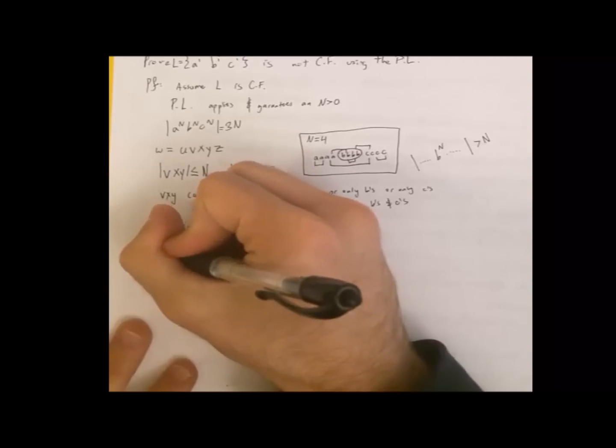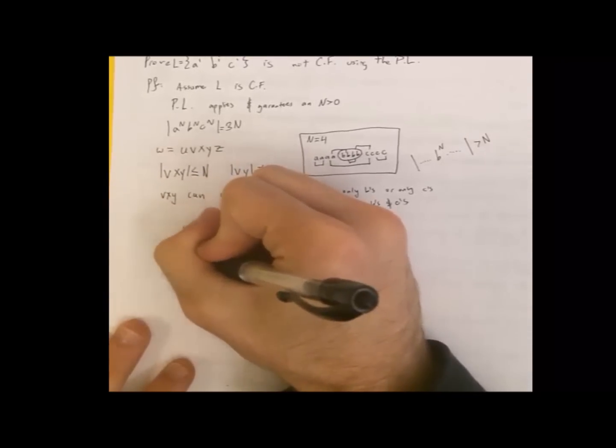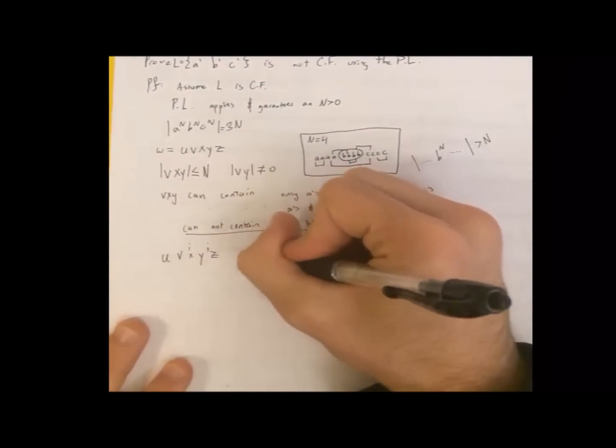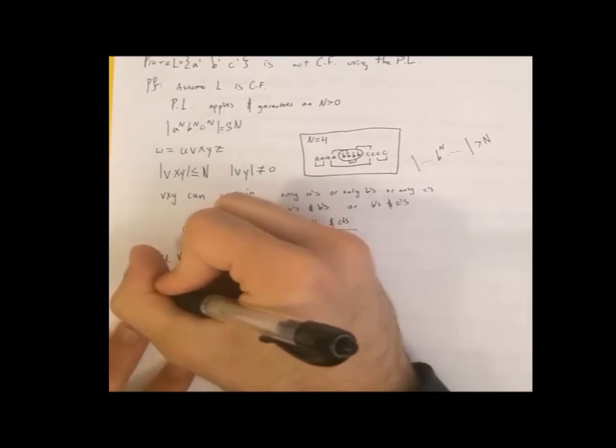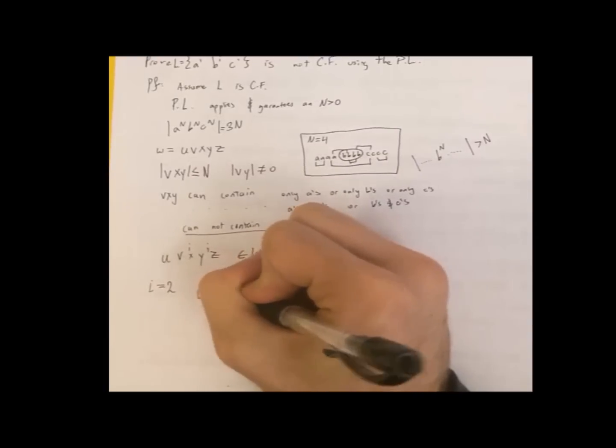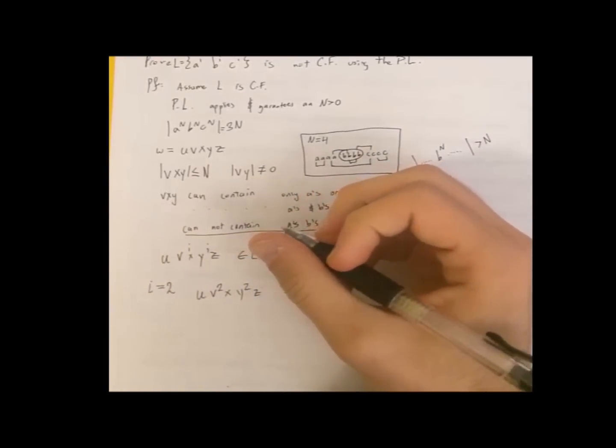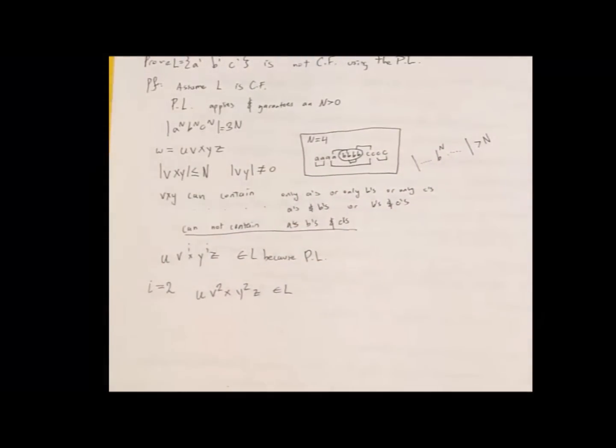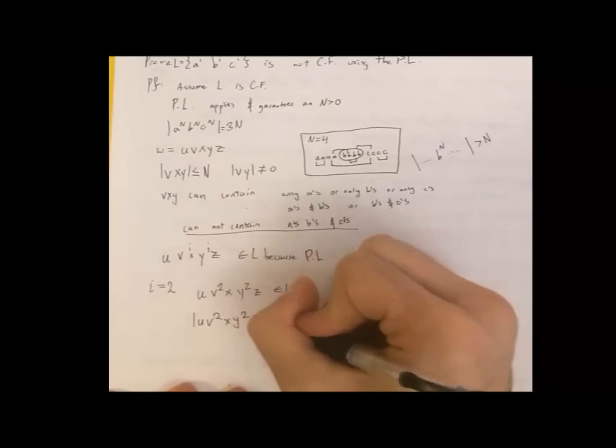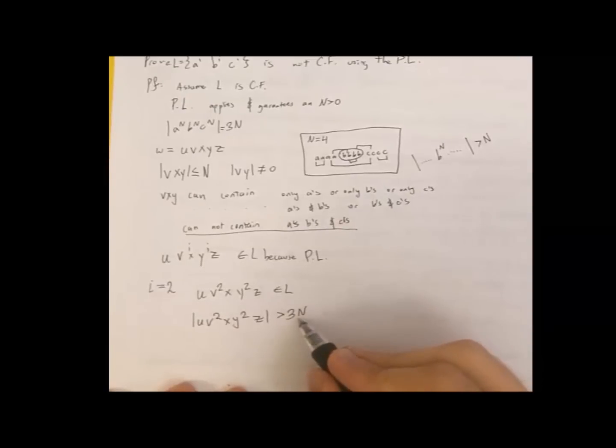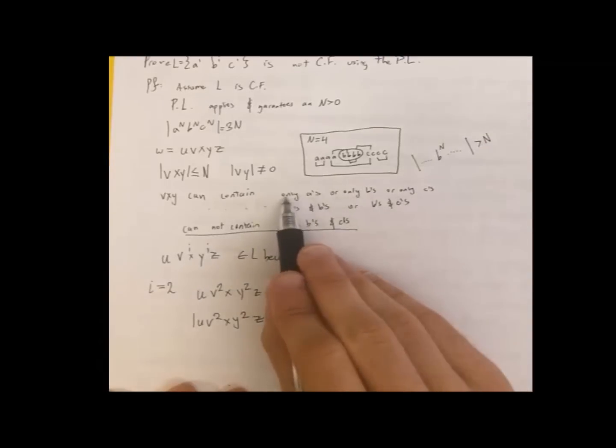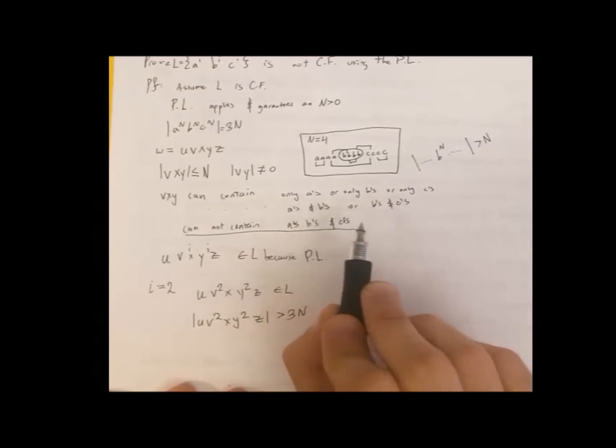So now, with the pumping lemma, we are allowed to pump in this format where we take the v's and the y's and pump it. And let's just say i equals 2 for this case, which would mean u v^2 x y^2 z. Which also exists in L because of the pumping lemma. Now, we know that this, u v^2 x y^2 z, is greater than our original string, greater than 3n. And we know that whatever we made longer, whatever we pumped, is not all three.